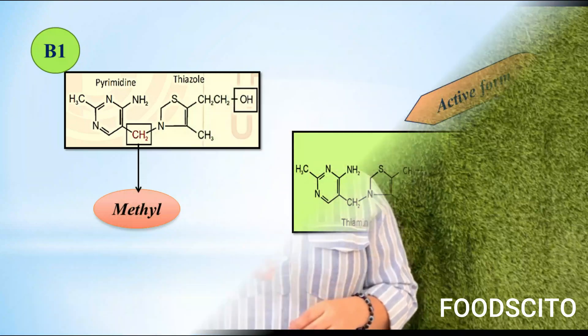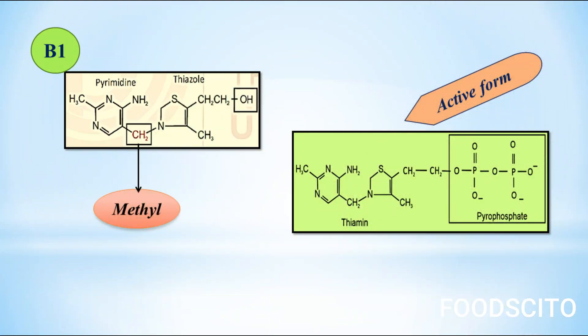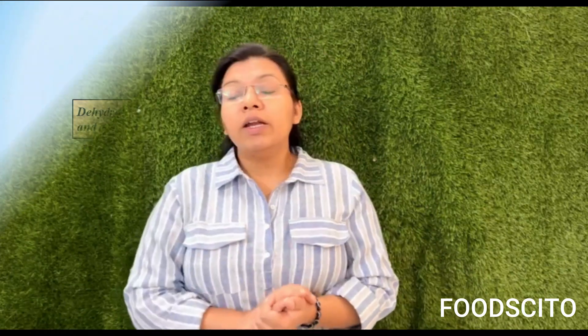Now let's have a look at its active form. Thiamine is converted into its biologically active form — thiamine pyrophosphate — in the human body. In thiamine pyrophosphate, the OH group of the thiazole ring is phosphorylated, meaning it contains two phosphate groups.